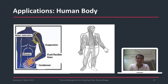Another application is in the human body. As we know, underarms have higher heat compared to other parts of the body. In winter, jackets can be designed to transfer heat from the underarms — a region of higher heat — to the hands, which are subjected to cold conditions. Research is ongoing in this particular area.